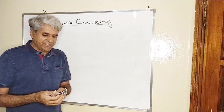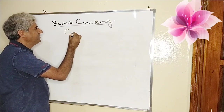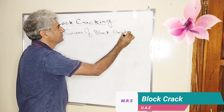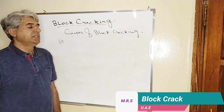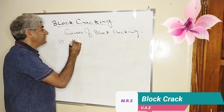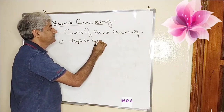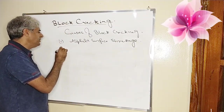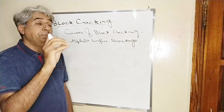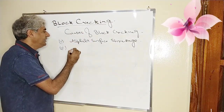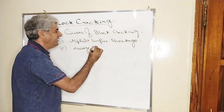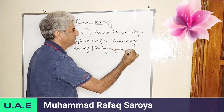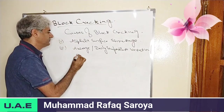Now we will understand the causes of block cracking. First of all, asphalt surface shrinkage. Why is the asphalt shrinking? This leads to another point: daily temperature variation or cycling. When there is daily temperature variation or cycling, asphalt surface shrinkage occurs, which leads to block cracking.